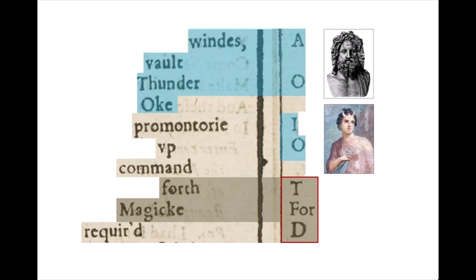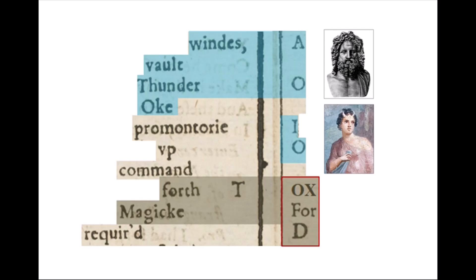So here's what happens. We know that in the story of Zeus and IO, he transforms her into a cow or ox, and we know that Edward de Vere, or Oxford, was the fourth T. Just like Zeus transformed IO into an ox, fourth T magic transforms the T in T4D into ox4D, spelling Oxford. A little alchemical transformation, if you will, and one of the more interesting typesetting codes I've seen.